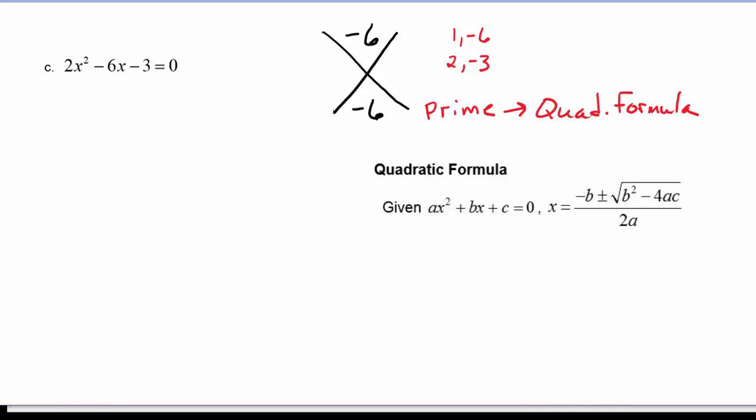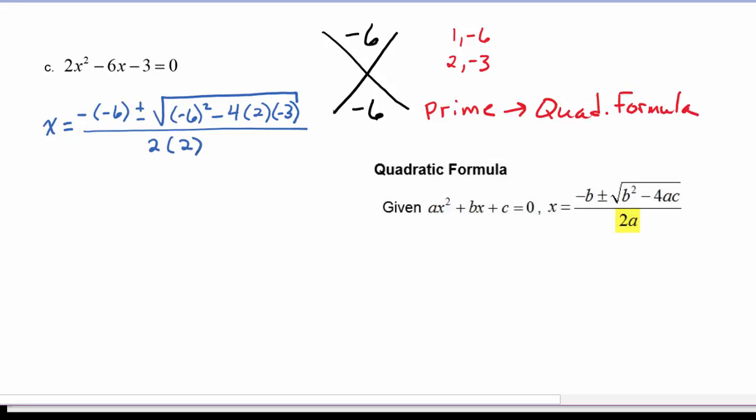So now, we've got x is going to be negative, negative 6, plus or minus the square root of negative 6 squared, minus 4, times 2, times negative 3. Let's clean this up. We've got 6 plus or minus the square root of 36, and there's a minus sign here and a negative 3 here, so that's going to turn into plus. 4 times 2 is 8 times 3 is 24. 36 plus 24 is equal to 60.